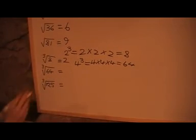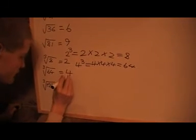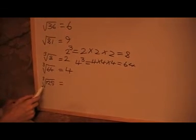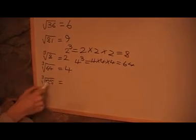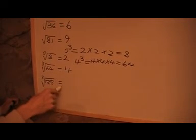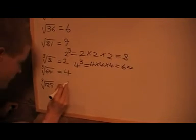So the cube root of 64 is 4. And the same for 125, I want to find a number I want to times it by itself 3 times, I get 125. And that's going to be 5.